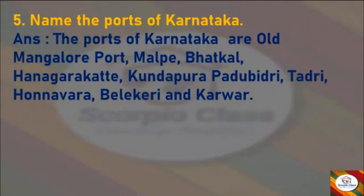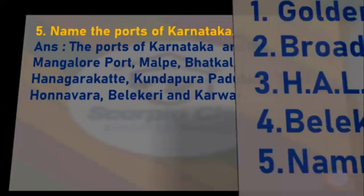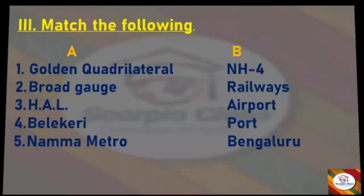Next question: Name the ports of Karnataka. Answer: The ports of Karnataka are Old Mangalore Port, Malpe, Bhatkal, Hanagara Kattay, Kundapura, Padubidri, Tadri, Honnavara, Belakiri and Karwar. These are the ports of Karnataka. We are now finished with the Answer the Following section.